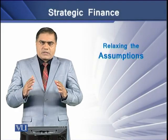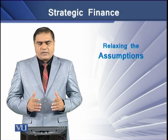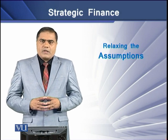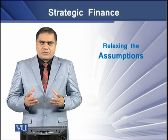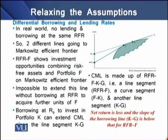Now let's see what effect will be on the CML and the SML if any of the assumptions related to the CAPM are relaxed. We know that the CAPM assumes borrowing and lending at the same risk-free rate, but in the real world it is impossible to lend and borrow at the same rate. So we see two different lines going to the Markowitz efficient frontier.